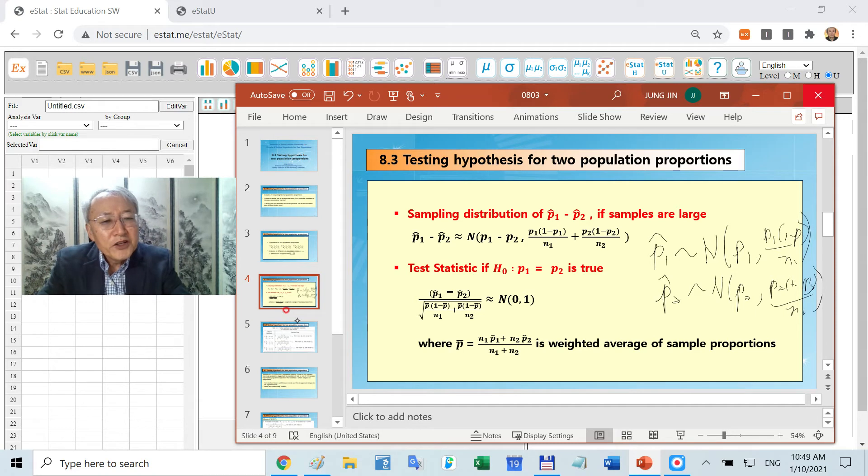These are random variables. The subtraction of these two random variables, the mean is P1 minus P2, and the variance should be positive number. So that's the sample statistic. If I introduce this, if you understand the testing hypothesis, you are ready to do all kinds of things.